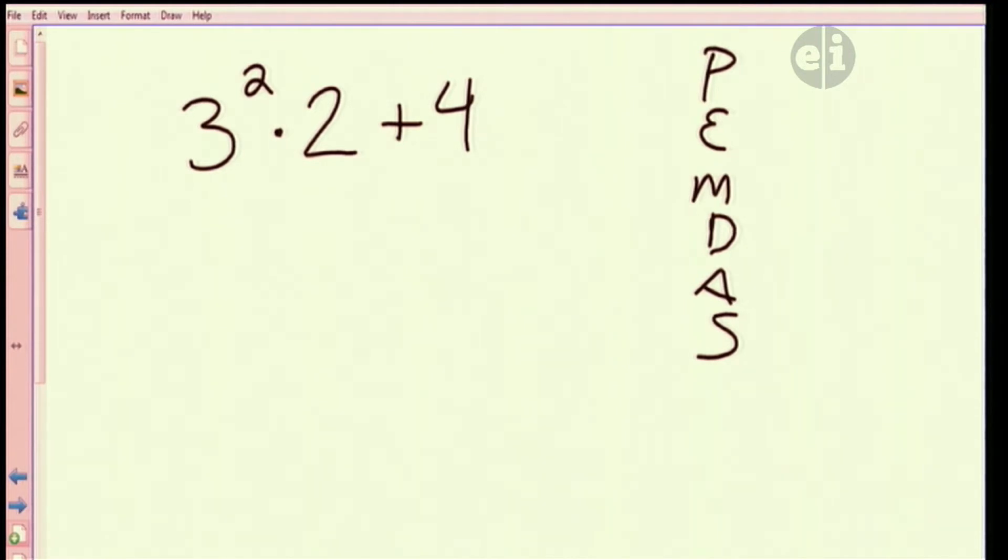P stands for parentheses. Okay, I'm just gonna put the little symbol there. What does the E stand for? Exponents. Exponents, okay. How about the M? Multiplication. The D? Division. Okay. The addition. I gave it away. The A is addition, and how about the S? Subtraction. Great.